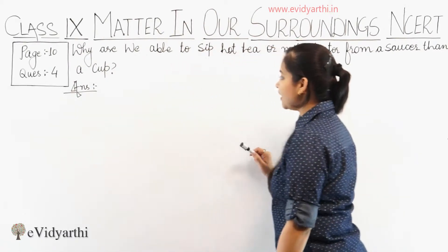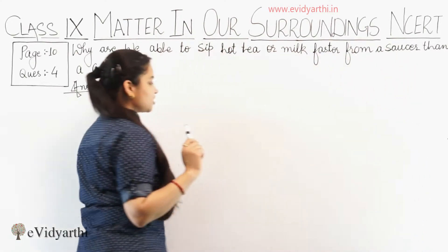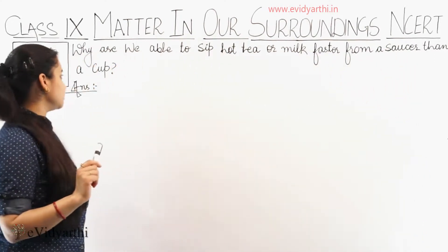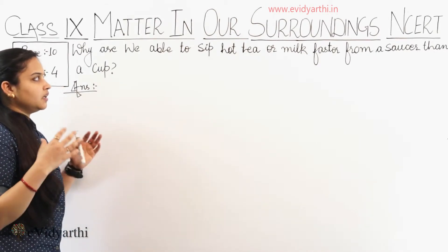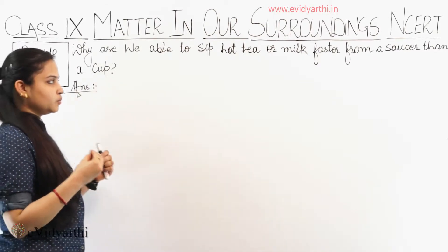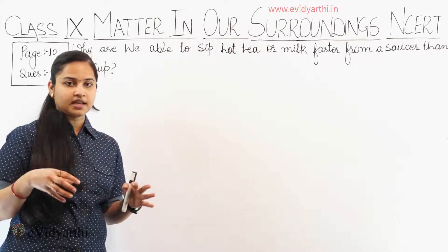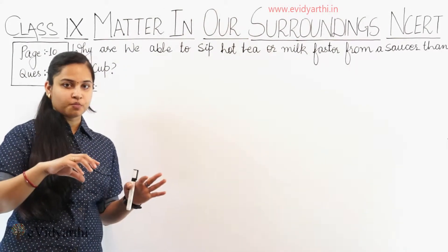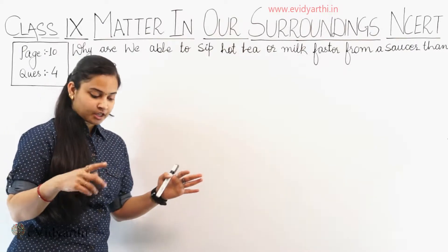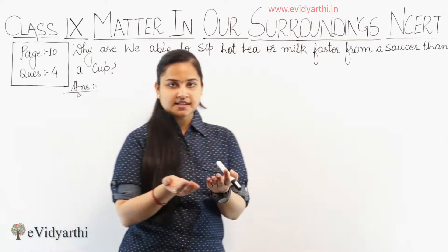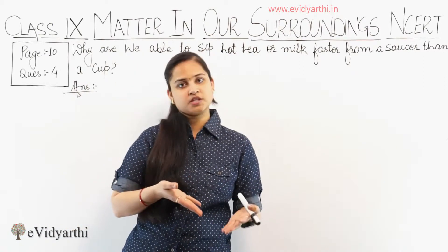Question: Why are we able to sip hot tea or milk faster from a saucer than a cup? A saucer is a dish which has more surface area. So this is the question.